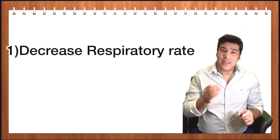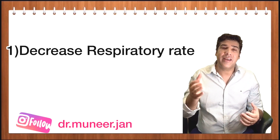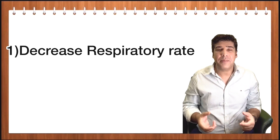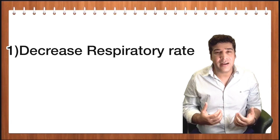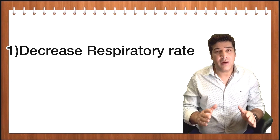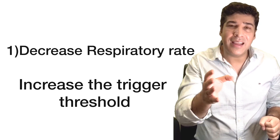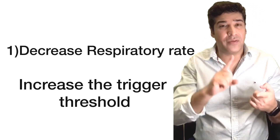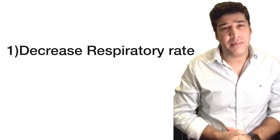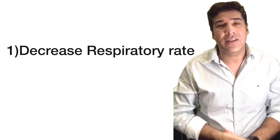Now, if the patient is having respiratory efforts and the ventilator is providing assist breaths, in these situations by decreasing the respiratory rate you will not solve the problem of auto PEEP or gas trapping. In this situation, you can increase the threshold for triggering — either the flow or the pressure threshold — or simply you can put the patient on complete paralysis. By that, you can get rid of this auto PEEP.